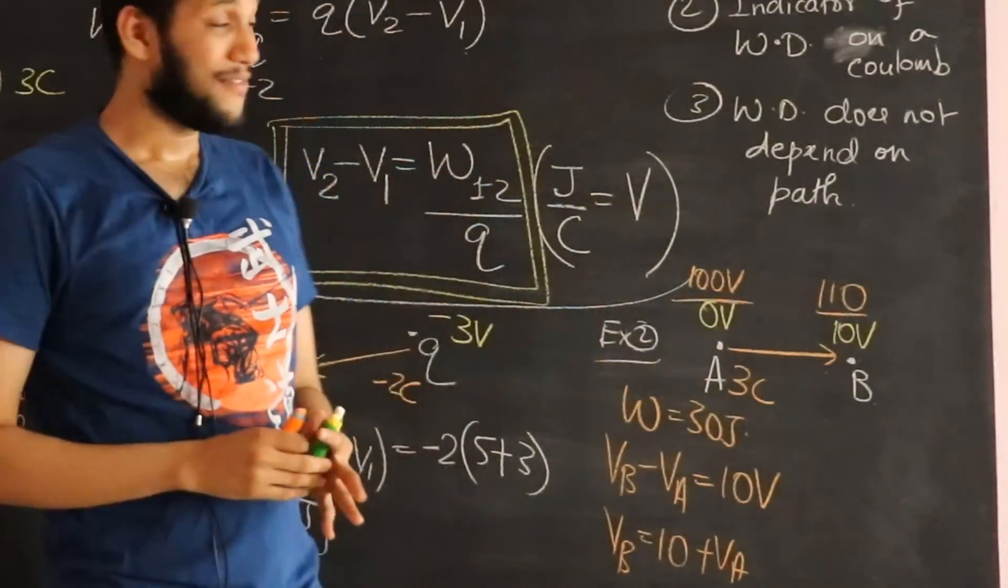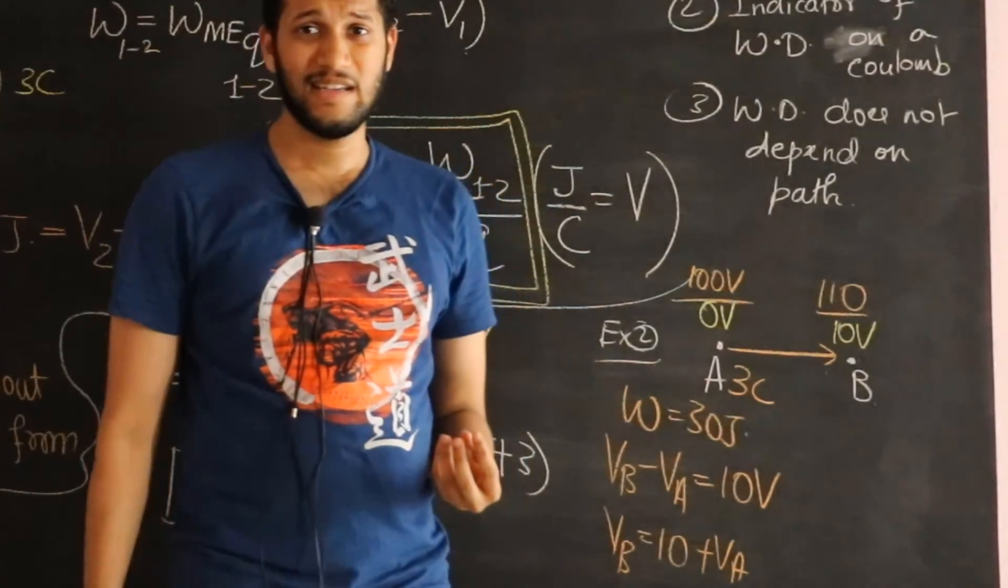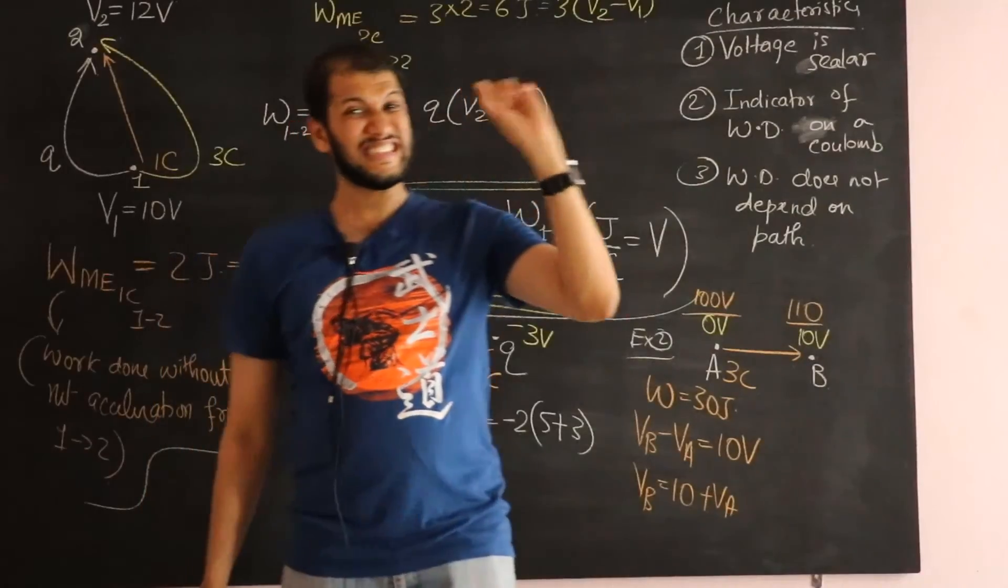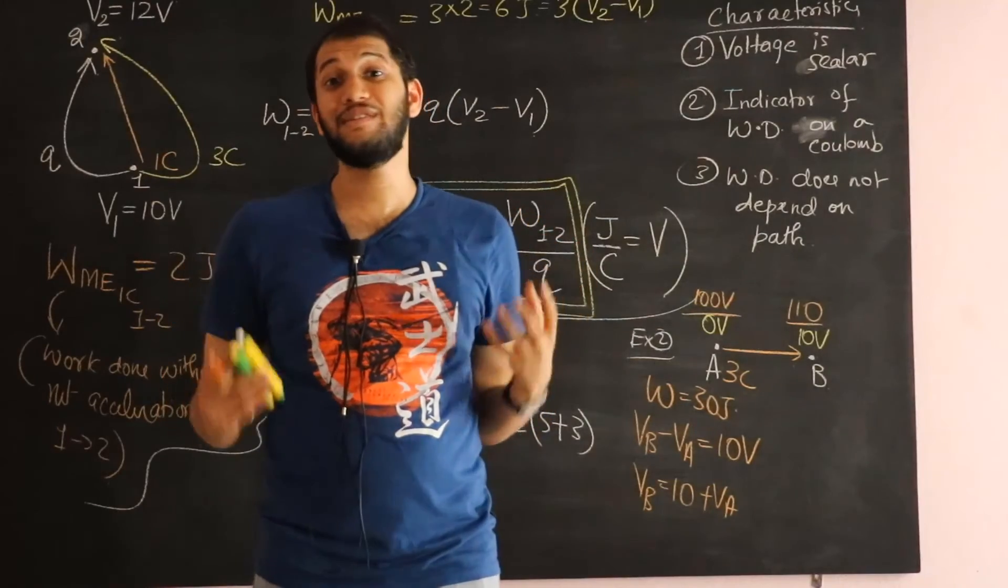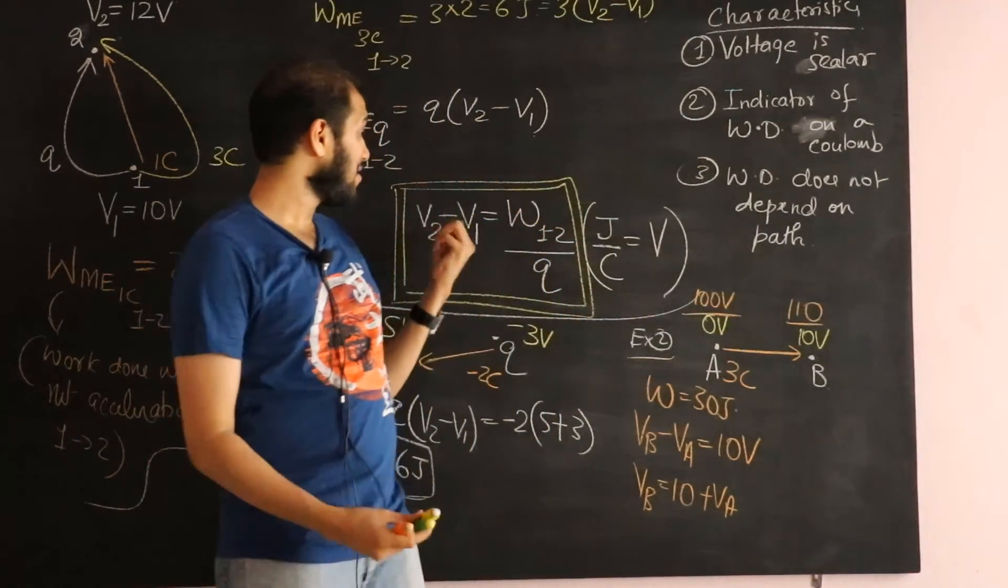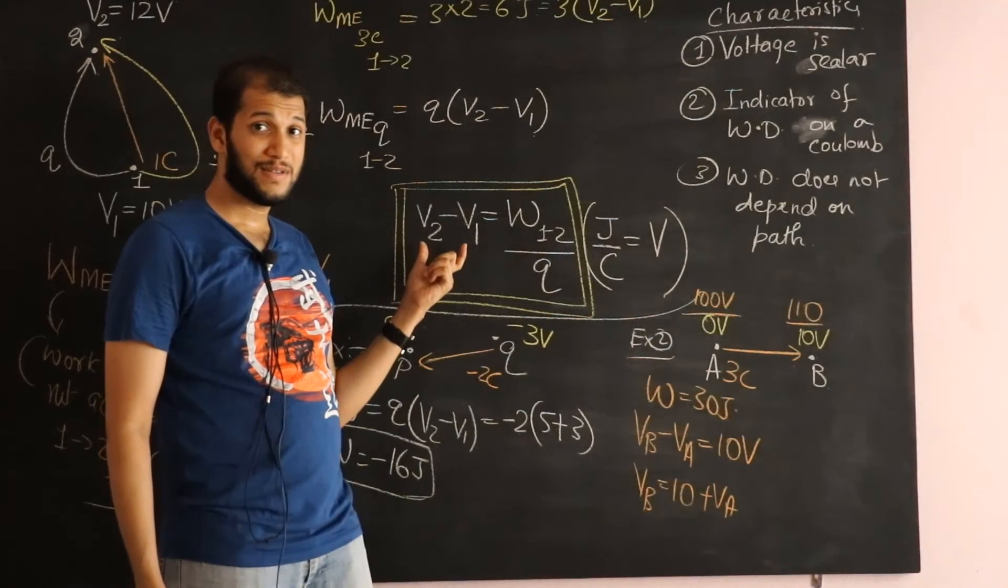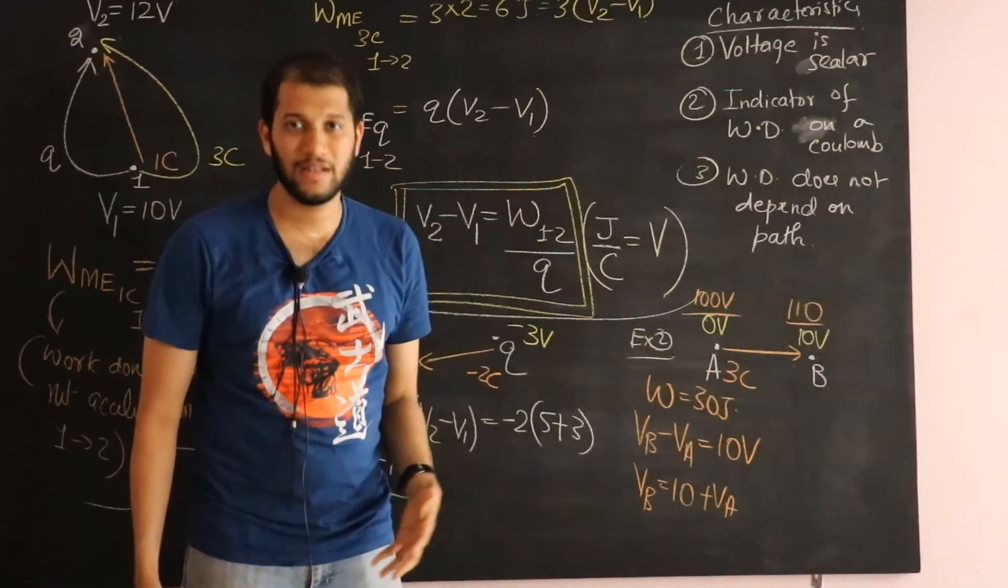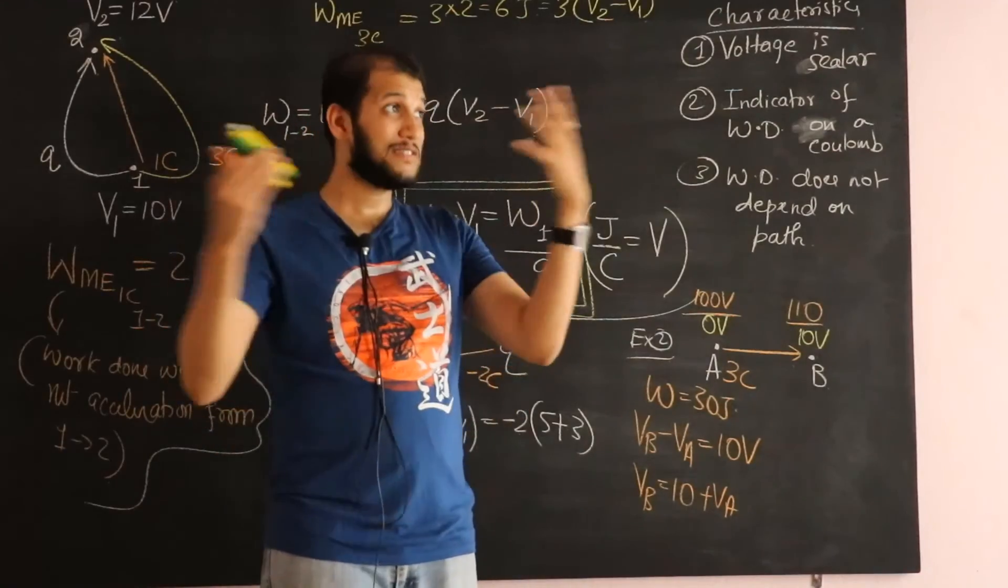And so this is telling you something. Something deep about voltage. It tells you that voltage at a single point can be any arbitrary number that you choose. What matters for the work done is the difference in the voltage. Voltage at any point is usually chosen arbitrarily.